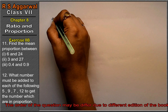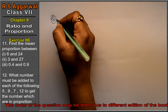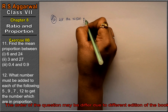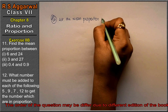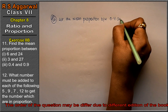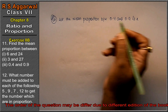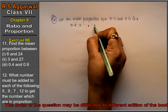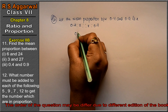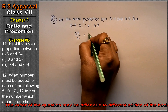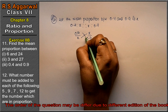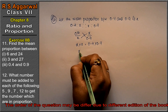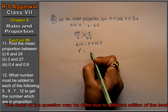Let us do the third part. The third part is 0.4 and 0.9. Let the mean proportion between 0.4 and 0.9 be x. So we write 0.4 upon x equals x upon 0.9. Cross multiply: x into x equals 0.4 into 0.9. So x squared equals 0.36.